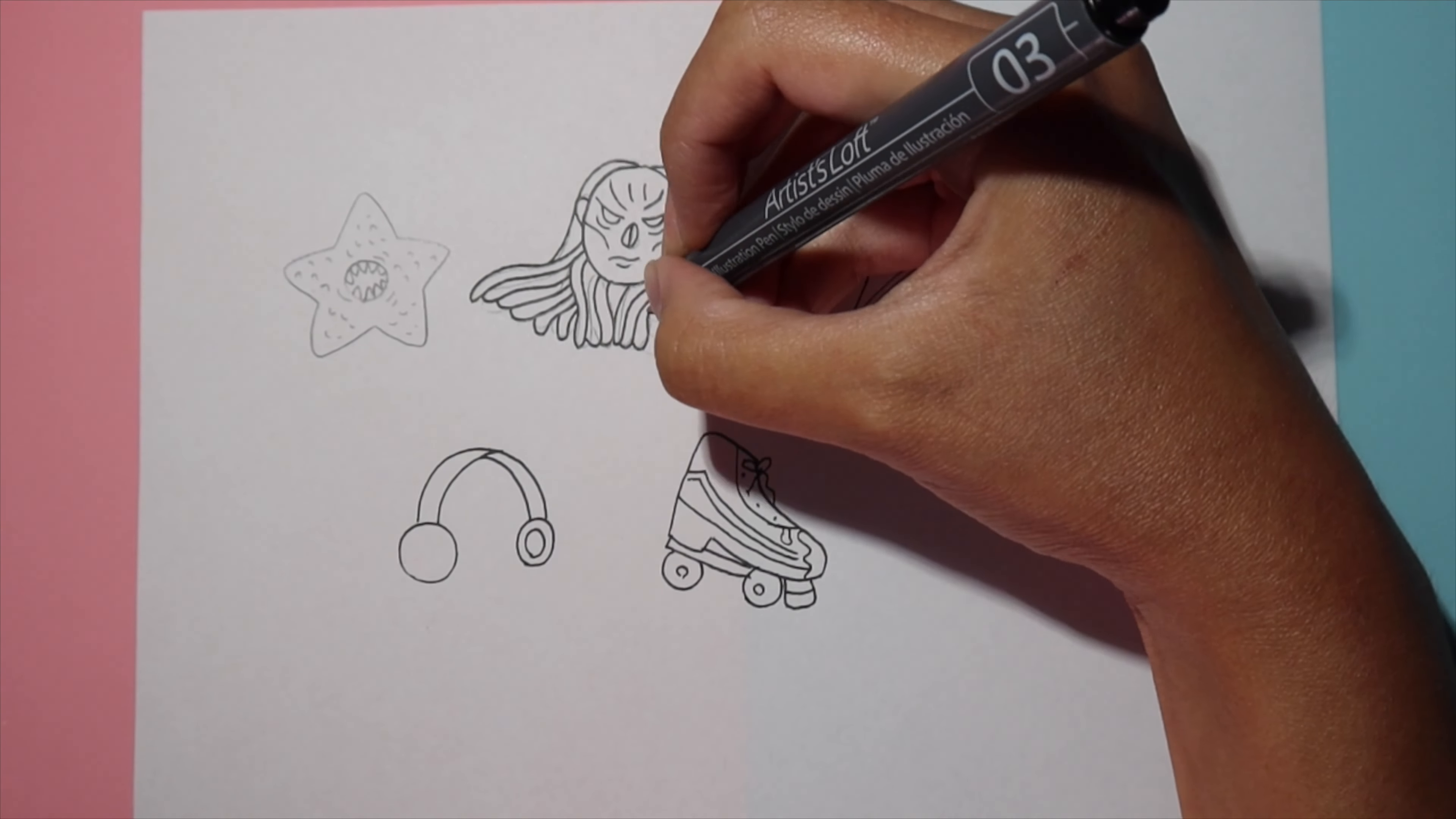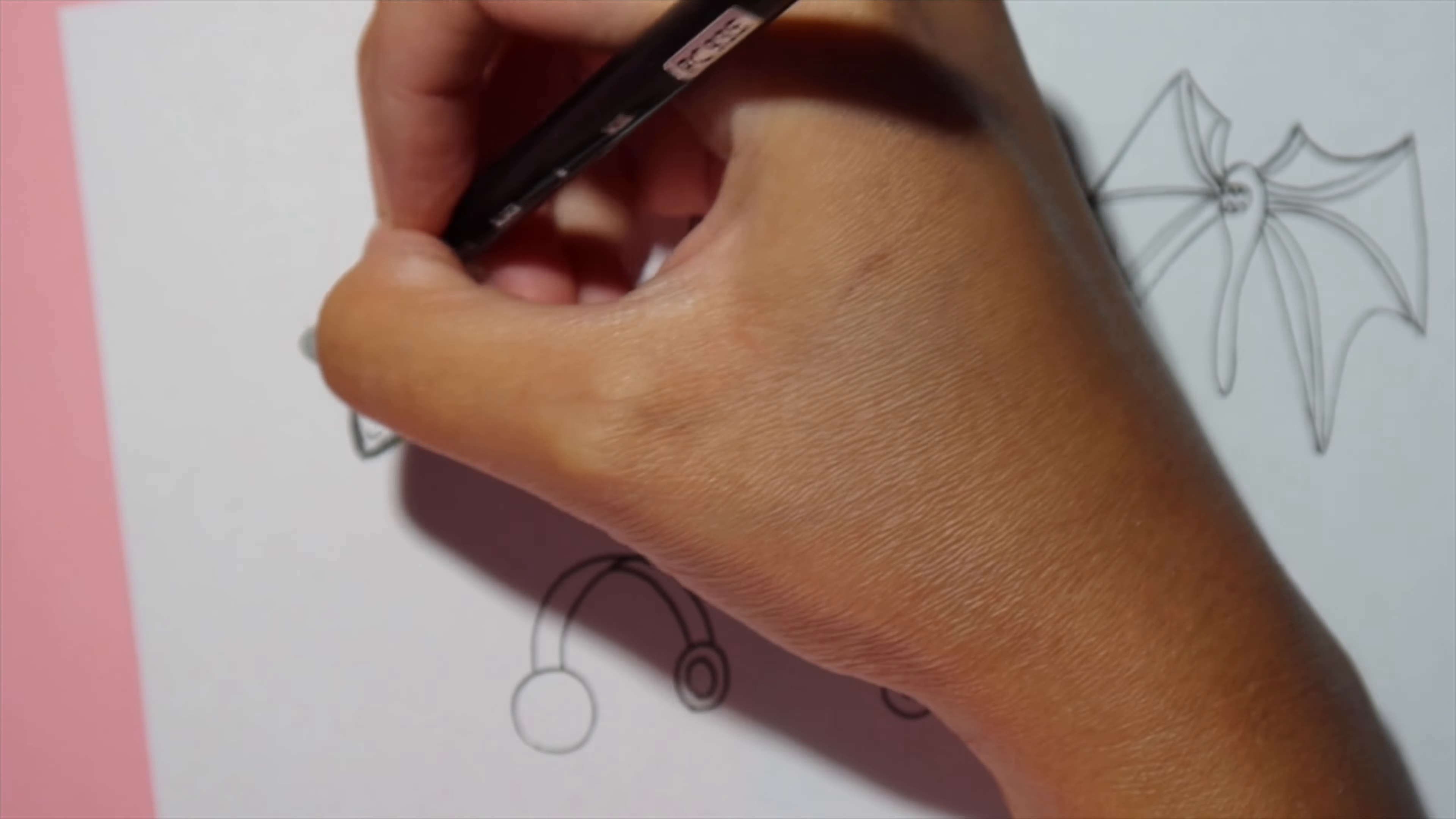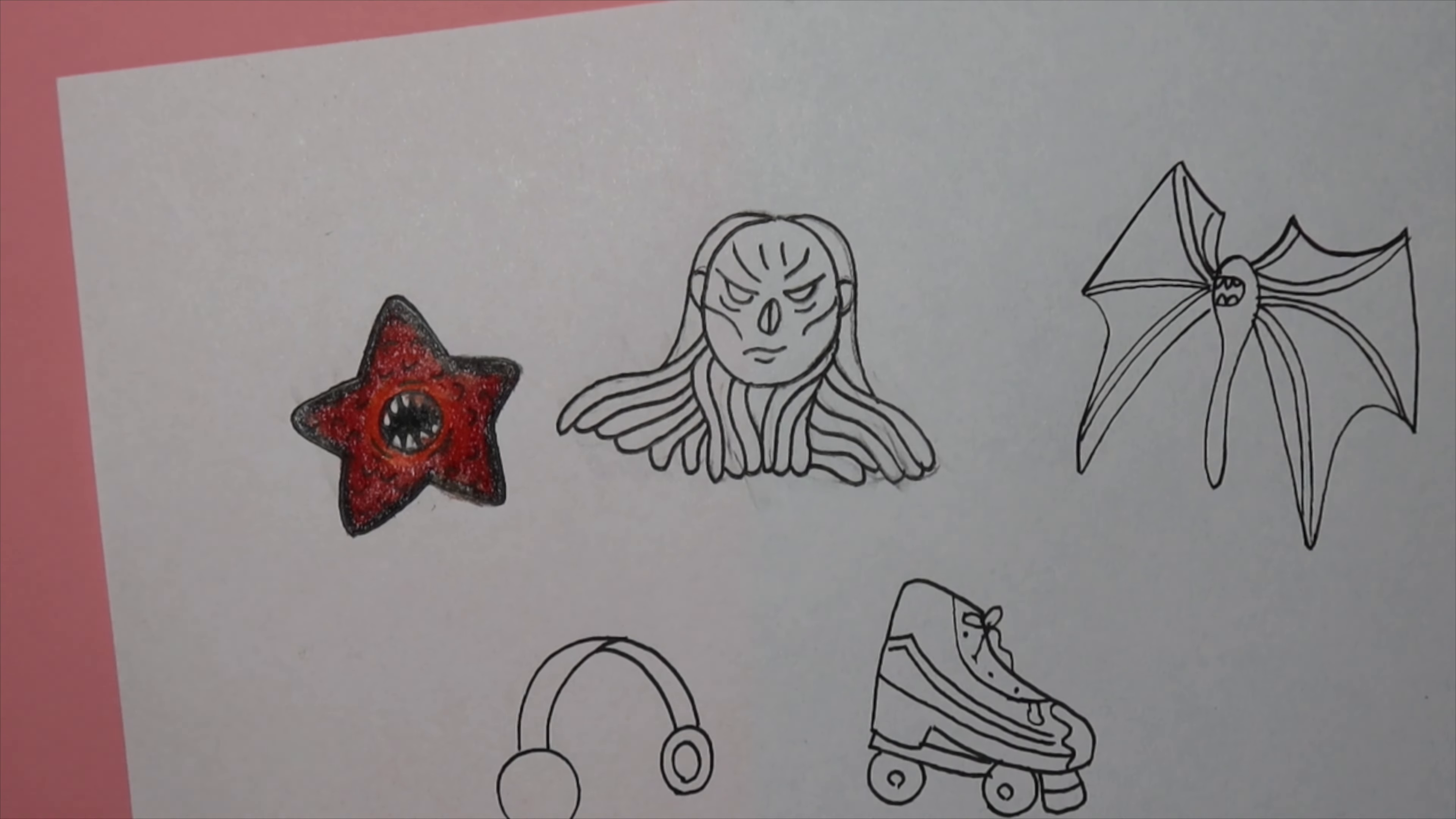I'm really curious to know which design is y'all's favorite. We have the Demogorgon, of course I had to include Vecna. We have one of those upside down bats, we have the headphones that Max used, and we have the bloody skate. So comment down below which one is your fave and which one you are going to be using. Of course, I hope you guys use all of them to make your stickers, but I'm just curious to know.